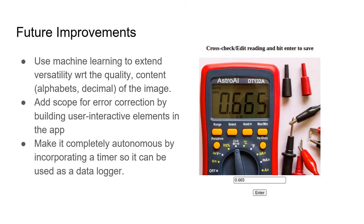Okay, I'll quickly go through some of the ideas that can make the system better. At this point the display images should be limited to seven segment displays. Moving forward we would like for it to recognize decimal places and alphabets so that it can be used for more generic displays.